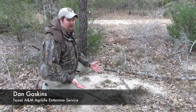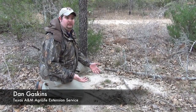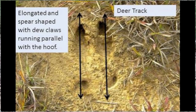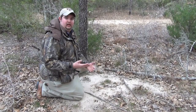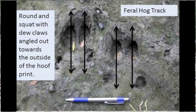One thing people sometimes have problems with is telling the difference between feral hog tracks and the track of white-tailed deer or another deer species. Here we have a white-tailed deer track and there are a few ways you can tell the difference. White-tailed deer and other deer tracks are usually going to be more elongated and a little bit more spear-shaped, whereas the feral hog tracks are going to be a little more round, a little more squat.